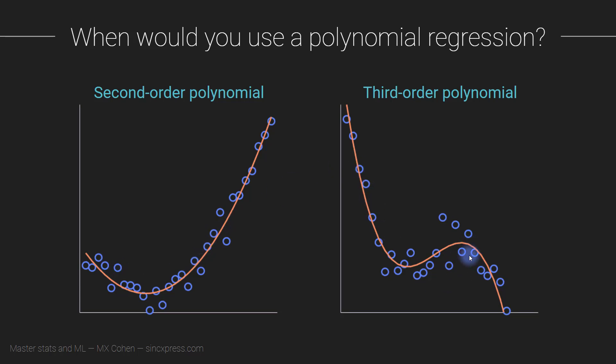And this would be a third order polynomial. So you'll probably recognize the general form of x cubed in this data set here. These would be the kind of data that you would use for a polynomial regression.